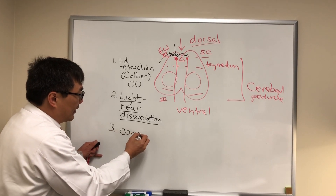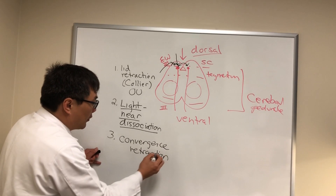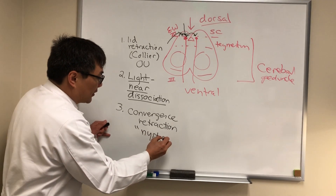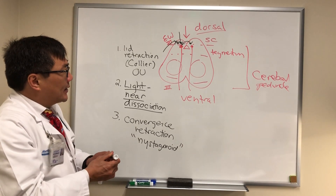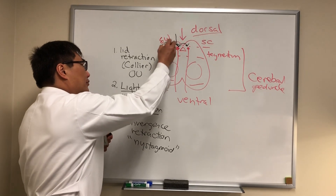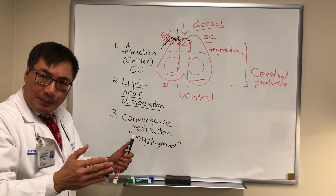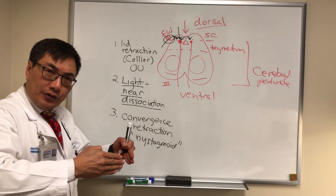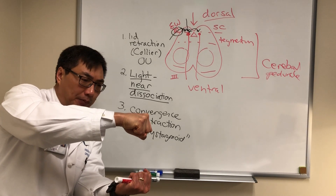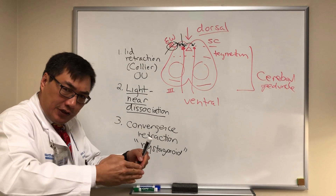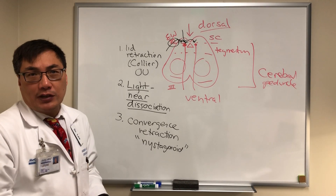We might also see a very unusual movement called convergence retraction nystagmus. Even though it's called nystagmus, it really isn't rhythmic, so it's really a nystagmoid movement and not a true nystagmus. Because we have innervation to the third nerve nucleus, we'll see firing of the muscles innervated by the third nerve. The medial rectus will fire, the eyes will converge, and we'll have retraction of the globe because both the superior rectus and inferior rectus will fire — when both muscles fire the globe retracts. So it converges and retracts because all muscles of the third nerve are firing.